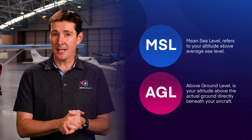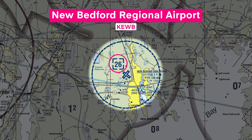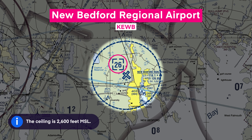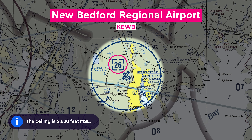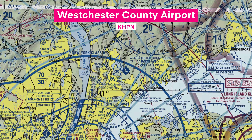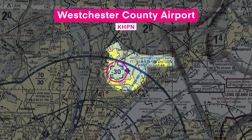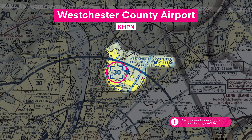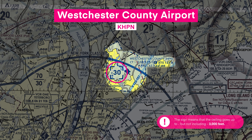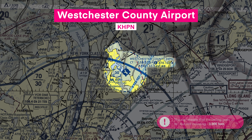Now, this is different from AGL — above ground level. The 2-6 here means that the ceiling is 2,600 feet MSL. But now let's take a look at Westchester County Airport. The ceiling here starts with a minus sign. No, the airport is not underground — although that would actually be pretty cool. The minus sign here means that the ceiling goes up to, but not including, 3,000 feet MSL.